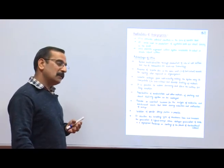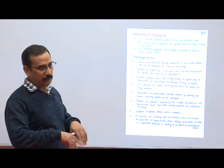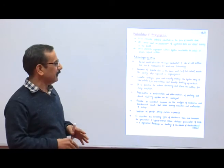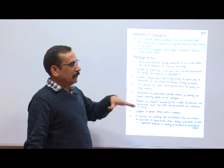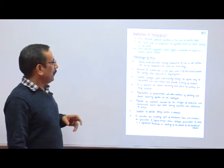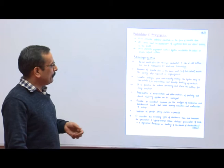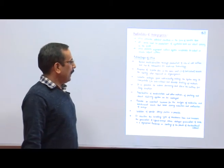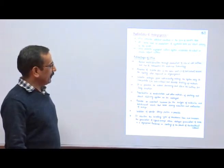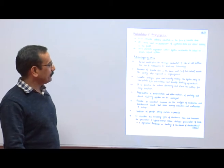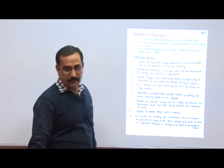Deciduous plants are those where leaves fall in a year and growth is very slow in vivo. Somatic embryogenesis increases the germination of hybrid embryo where delayed germination of seeds is a significant handicap for rooting of the plant in horticulture.